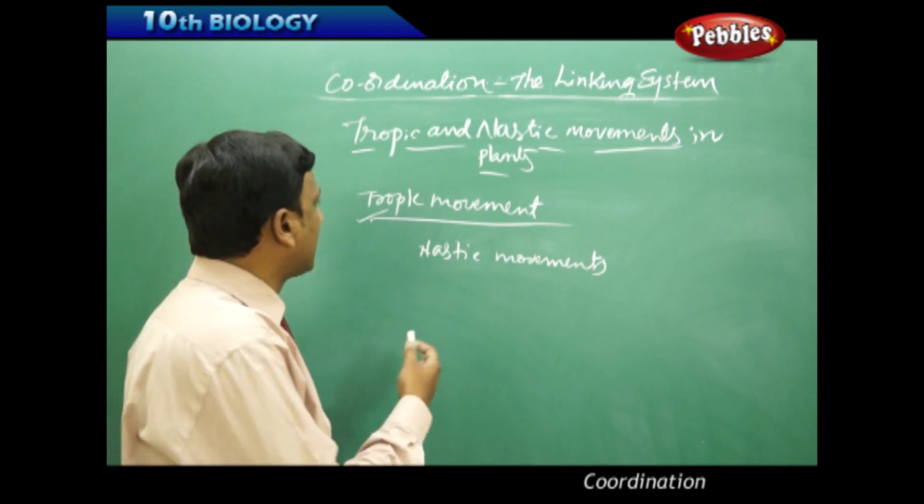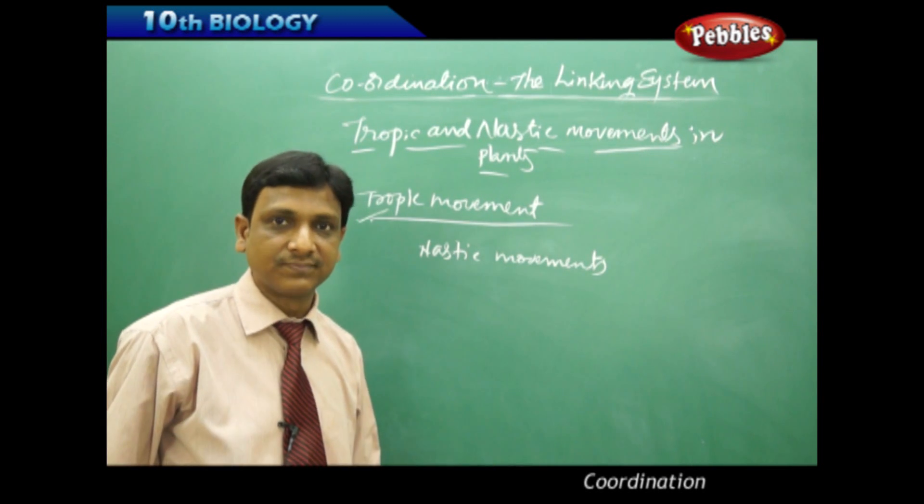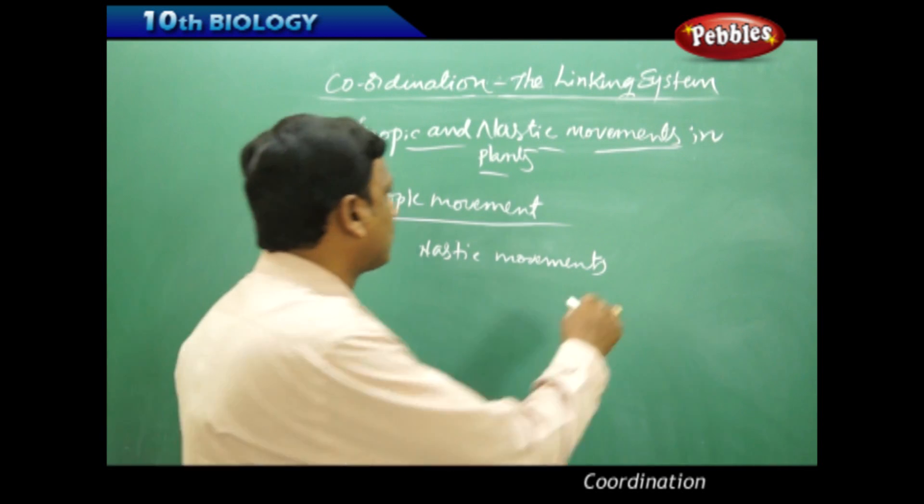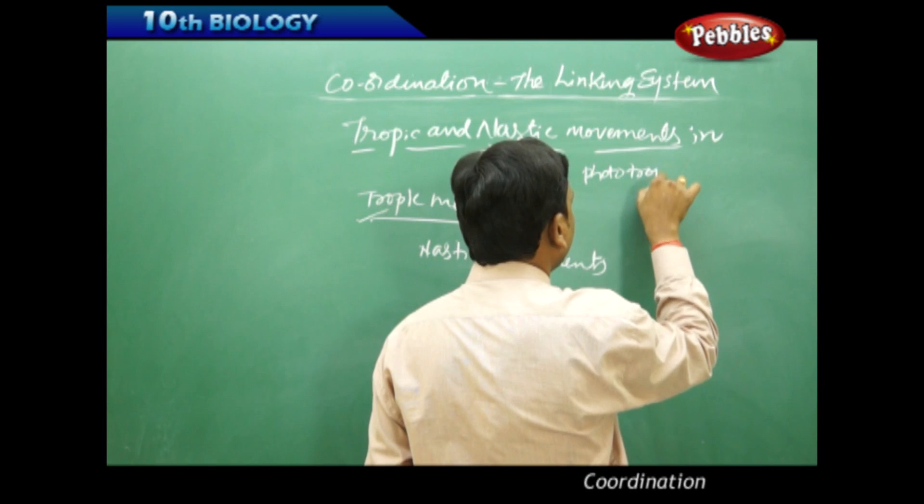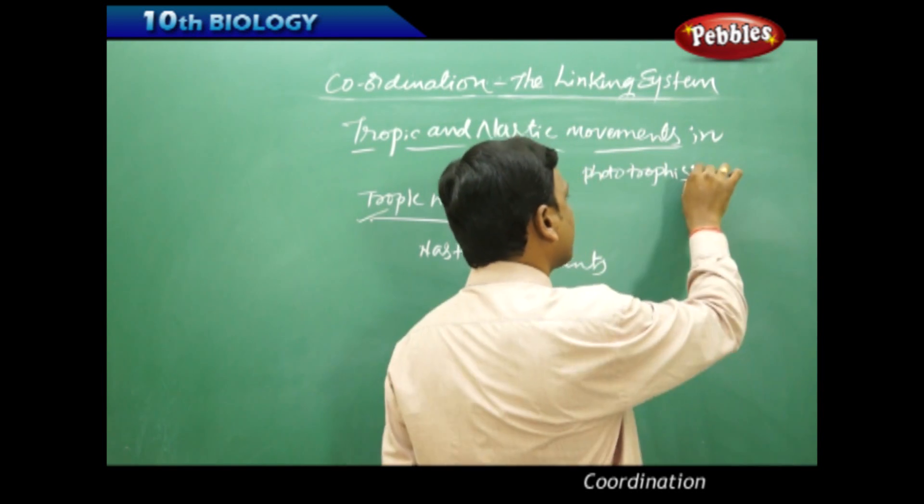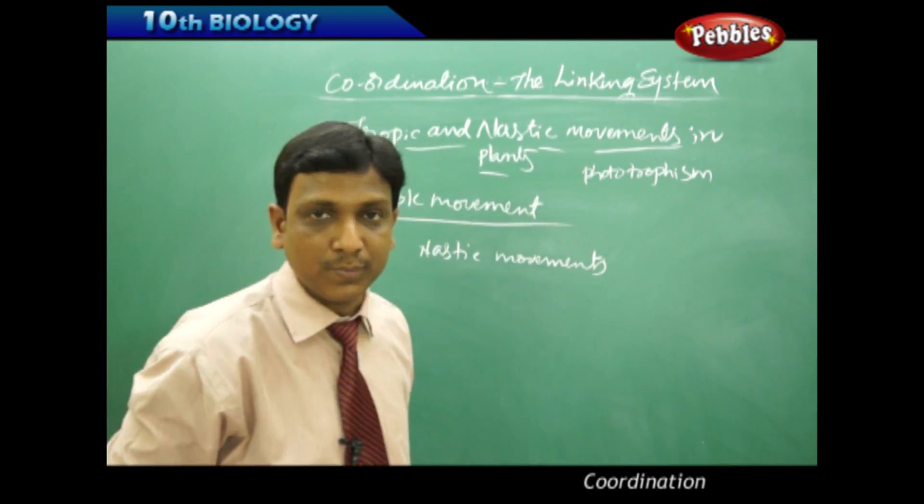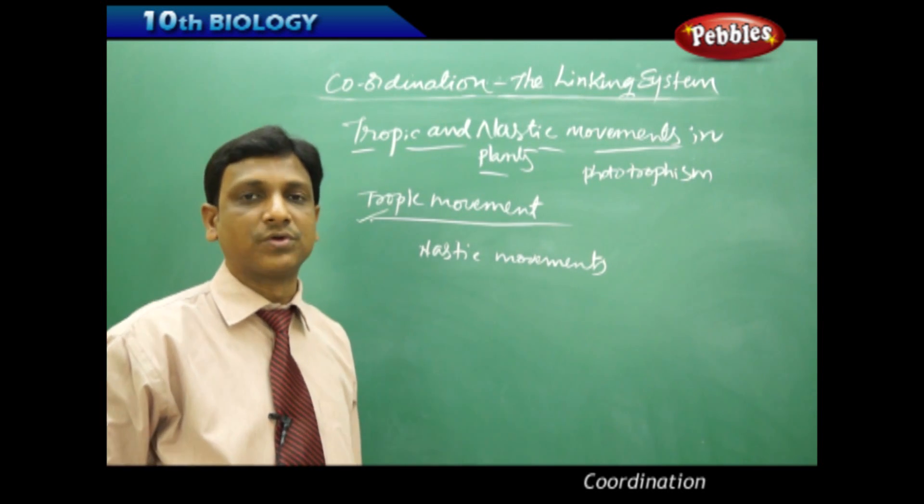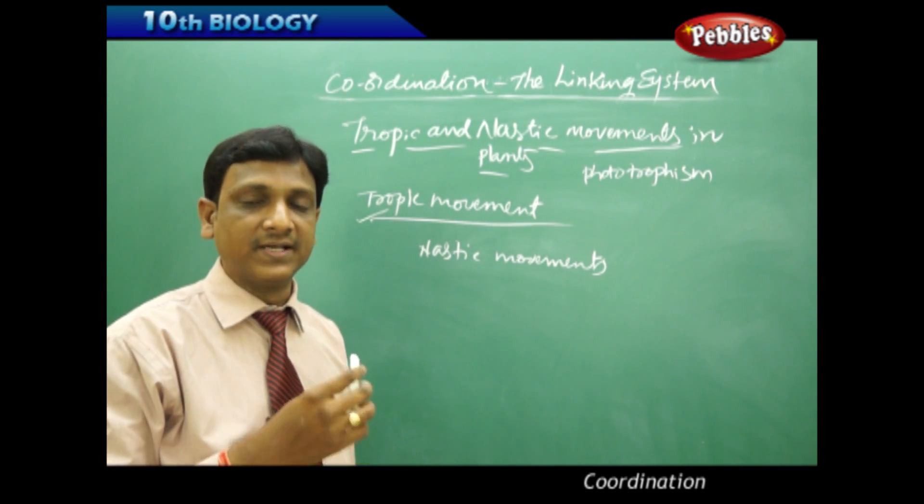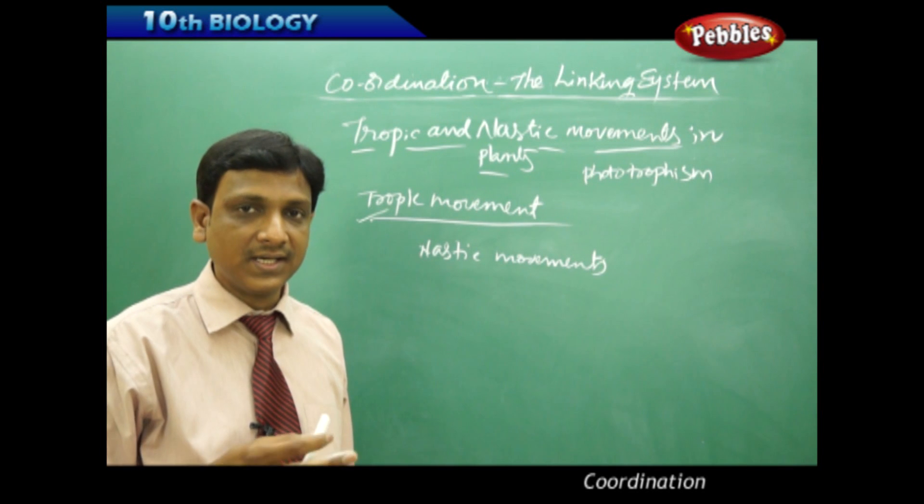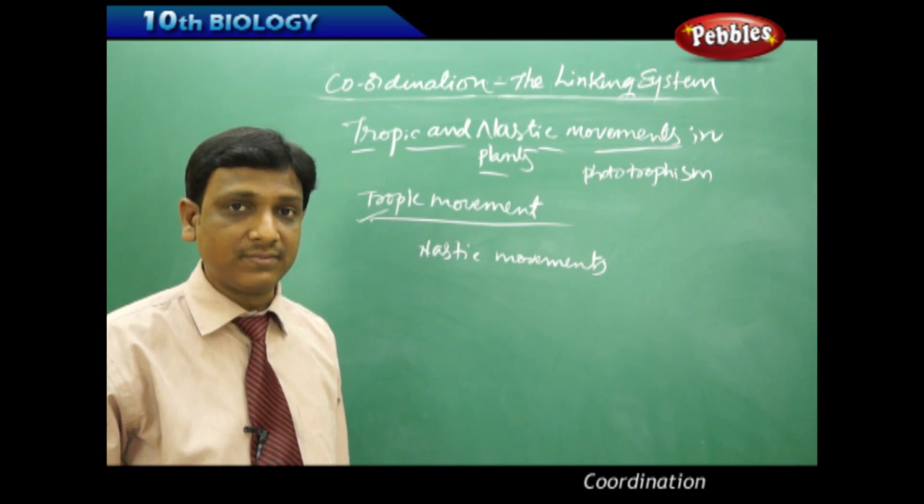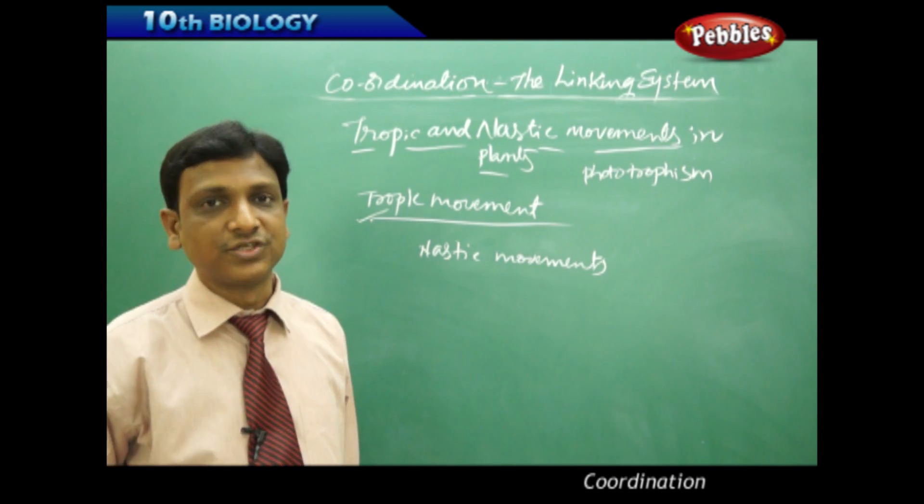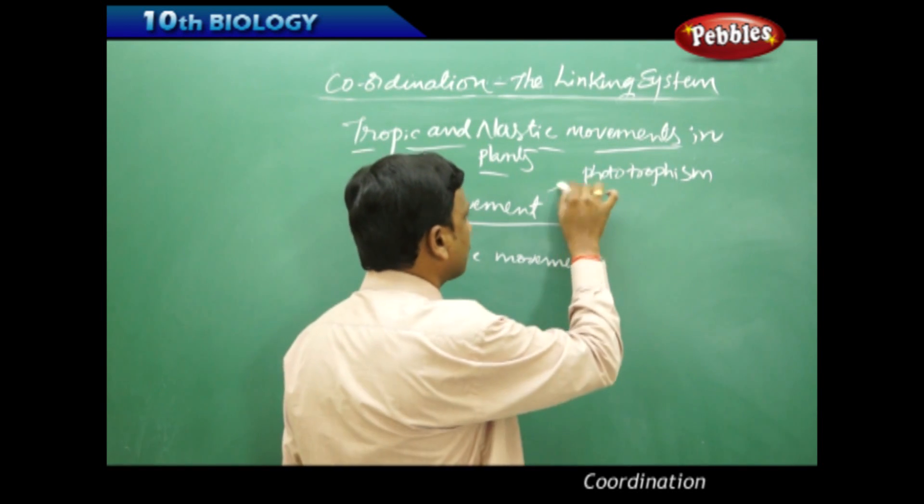Let us see the different kinds of Tropic Movements in plants. We already discussed one Tropic Movement, that is Phototropism. Photo means light. The tendency of the stems to bend towards the light is called Phototropism. We have done several activities in our lower classes. The stem of the plant always tries to bend towards the light, it grows in the direction of the light, and we call this tropism Phototropism.